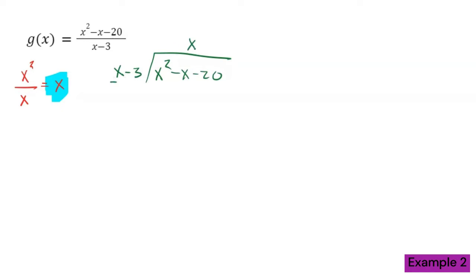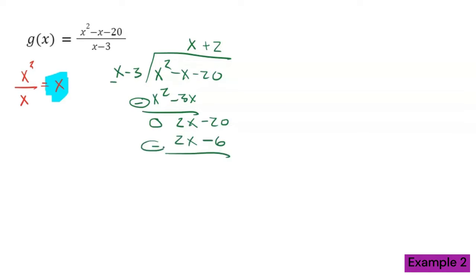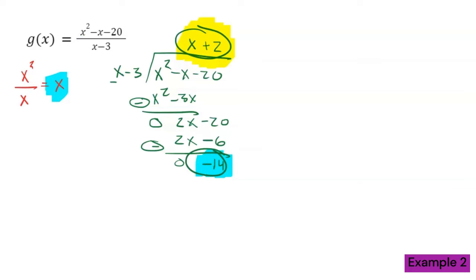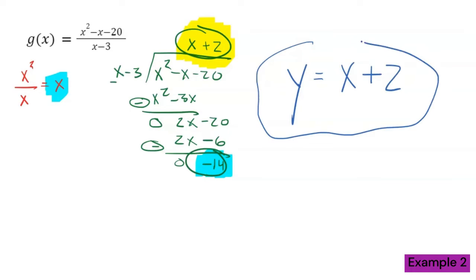How do I turn an x into an x squared? I multiply by x — x times x is x squared, negative three times x is negative three x — then I subtract. X squared minus x squared is zero; negative x minus negative three x is positive two x, bringing down the minus 20. How do I turn an x into a two x? Multiply by two — two times x is two x, negative three times two is negative six — then subtract again. Two x minus two x is zero; negative 20 minus negative six is negative 14. So the quotient is x plus 2 and the remainder is negative 14. When you're asked for the slant asymptote, only the quotient matters — the remainder has no impact. The equation of the slant asymptote is y equals x plus 2.